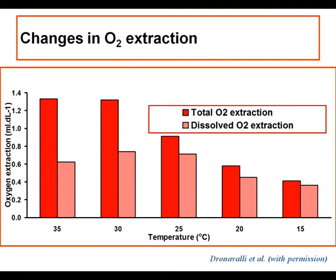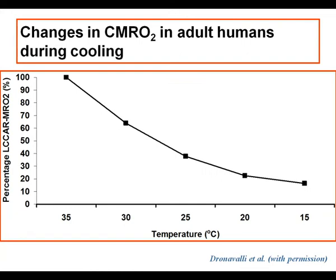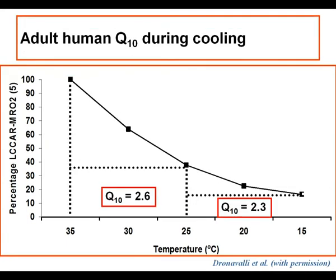If we take the 35 degrees centigrade metabolic rate as 100%, we can see that by 25 degrees centigrade the actual metabolic rate has fallen to about 45%. At 15 degrees centigrade it has fallen slightly below 20%. This allows us to calculate, in humans, the adult Q10, which shows 2.6 between 30 and 25 degrees, and 2.3 between 25 and 15 degrees.